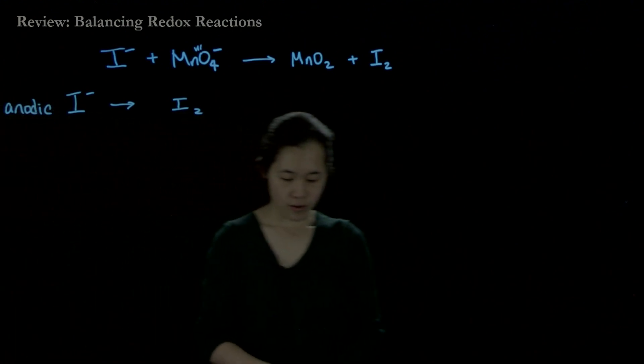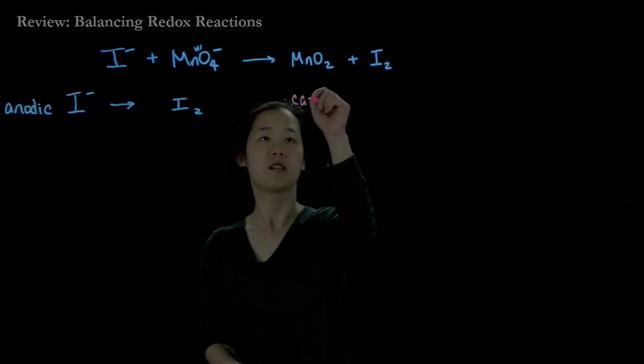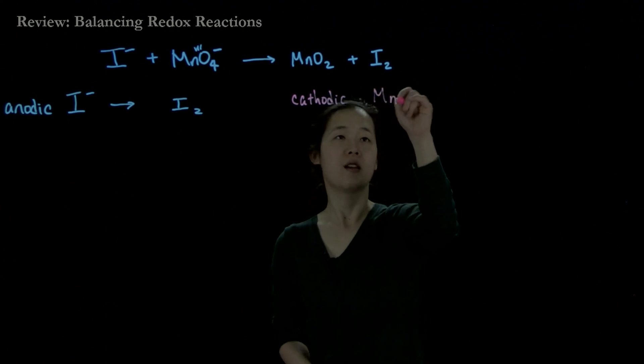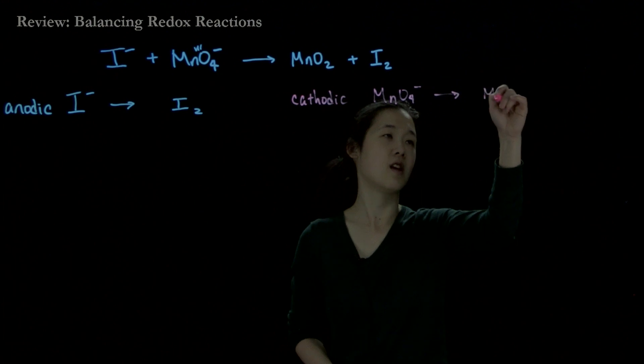On the right side, we have our cathodic reaction, which is MnO4- going to MnO2.